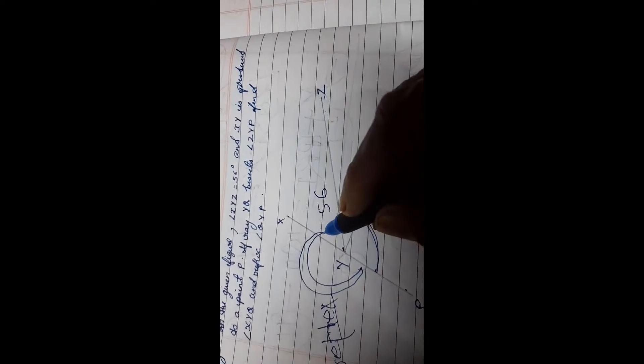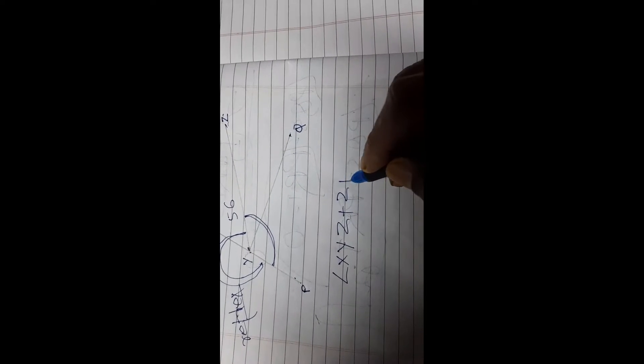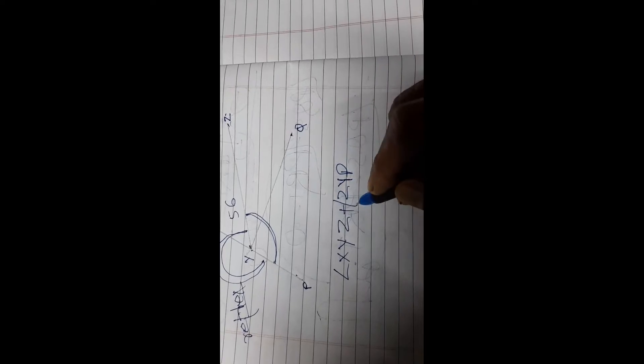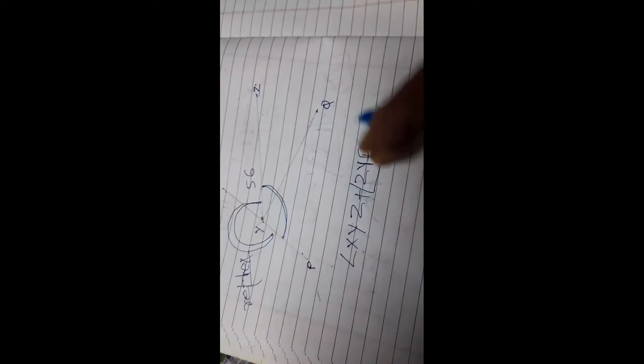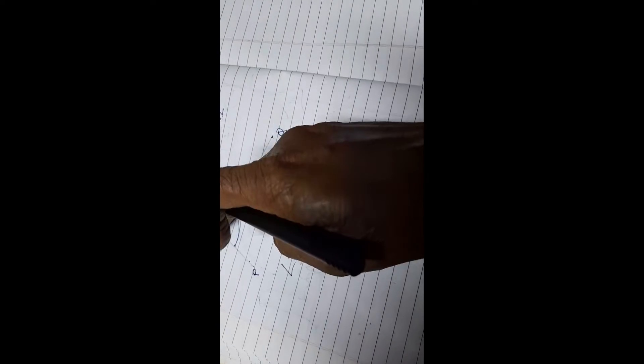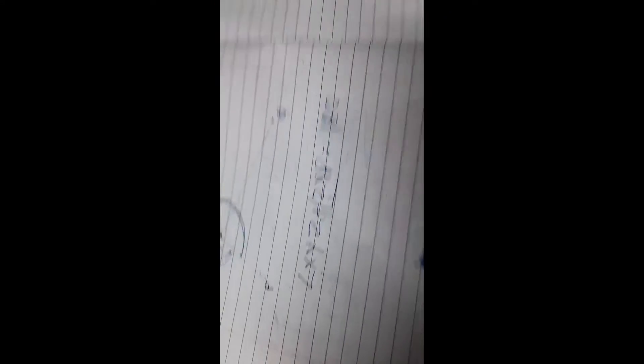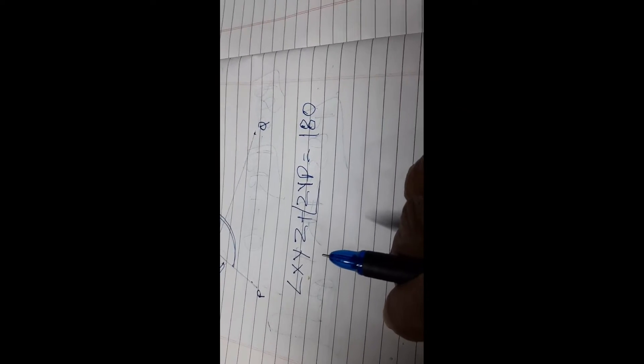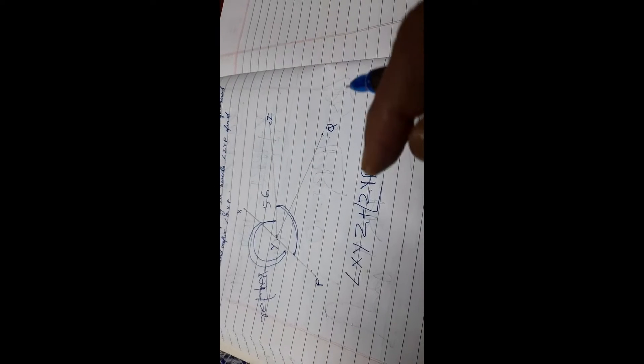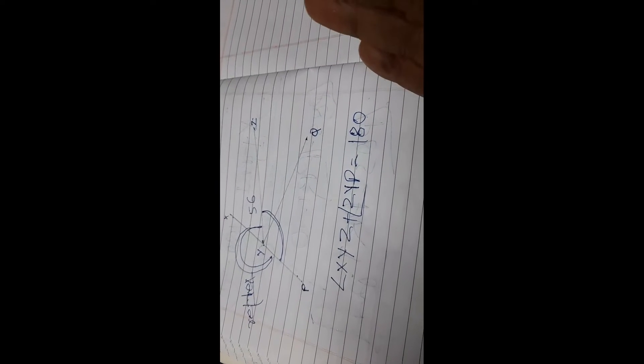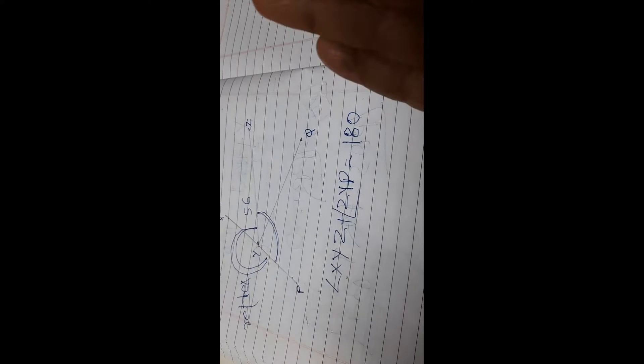Take the value of angle XYZ. Angle XYZ plus angle ZYP is equal to how much? It is 180. Why is it 180?